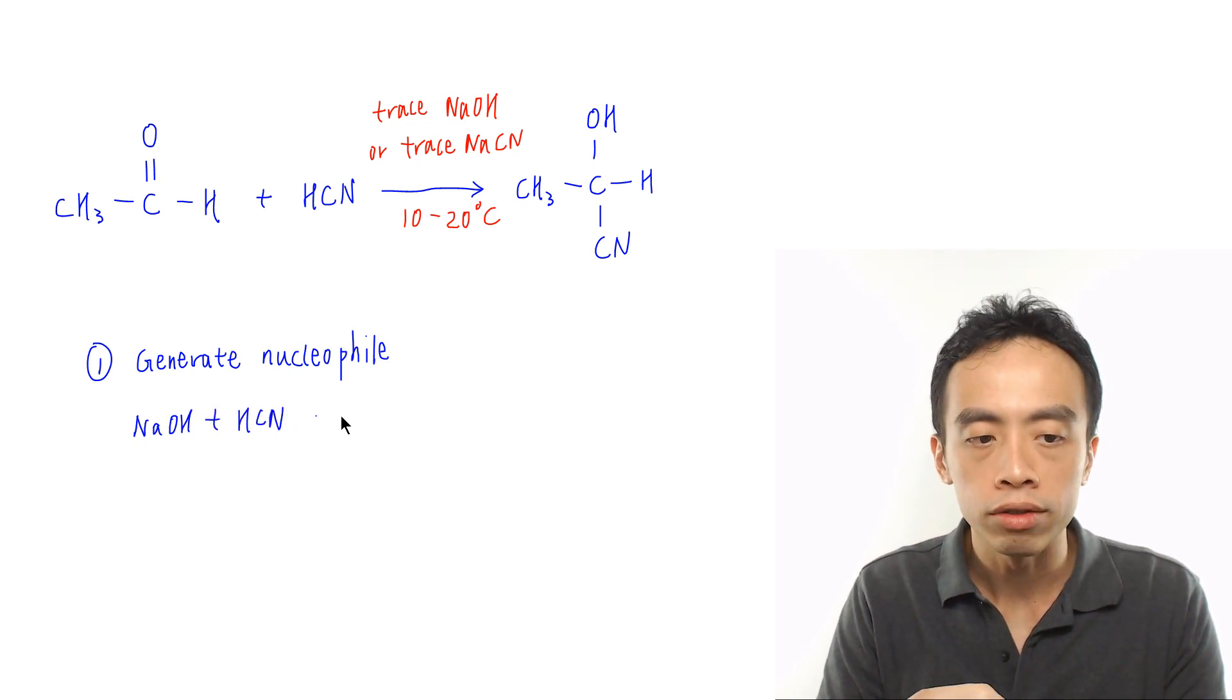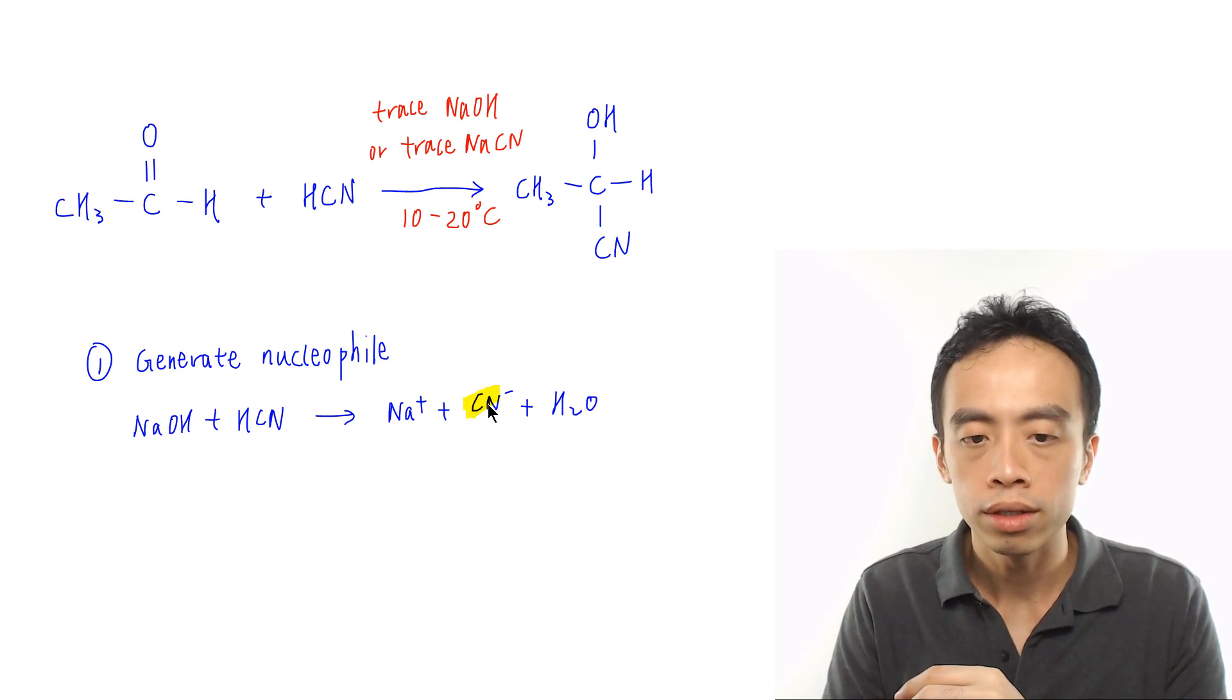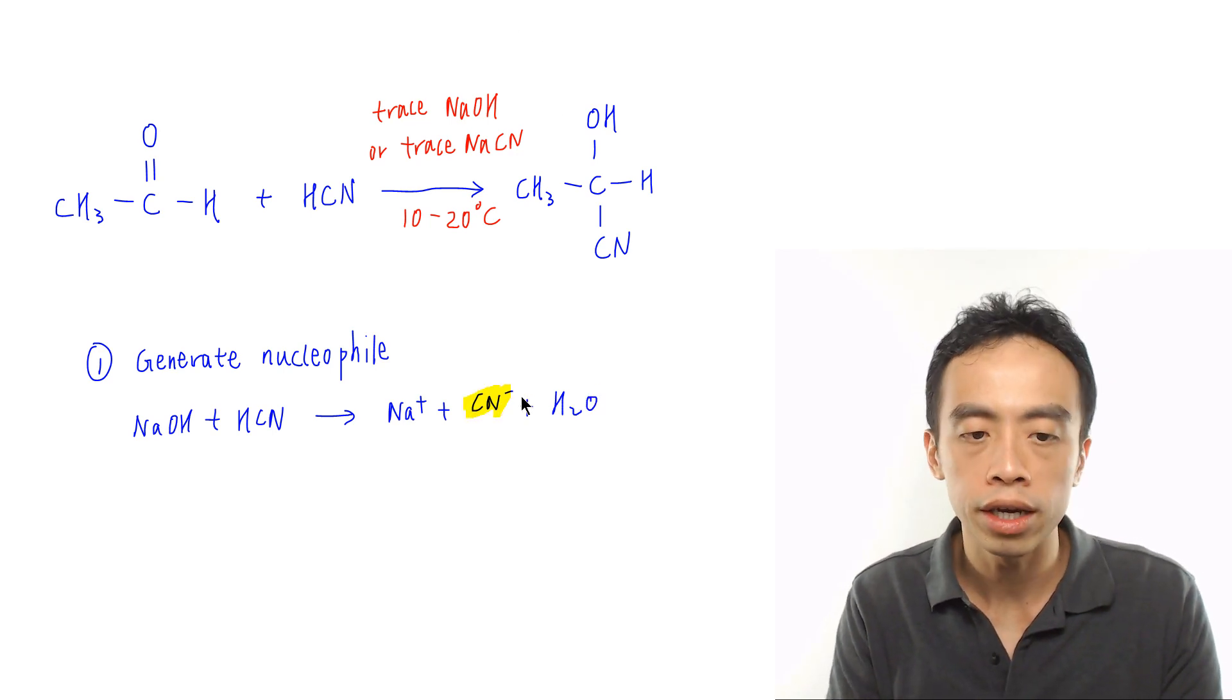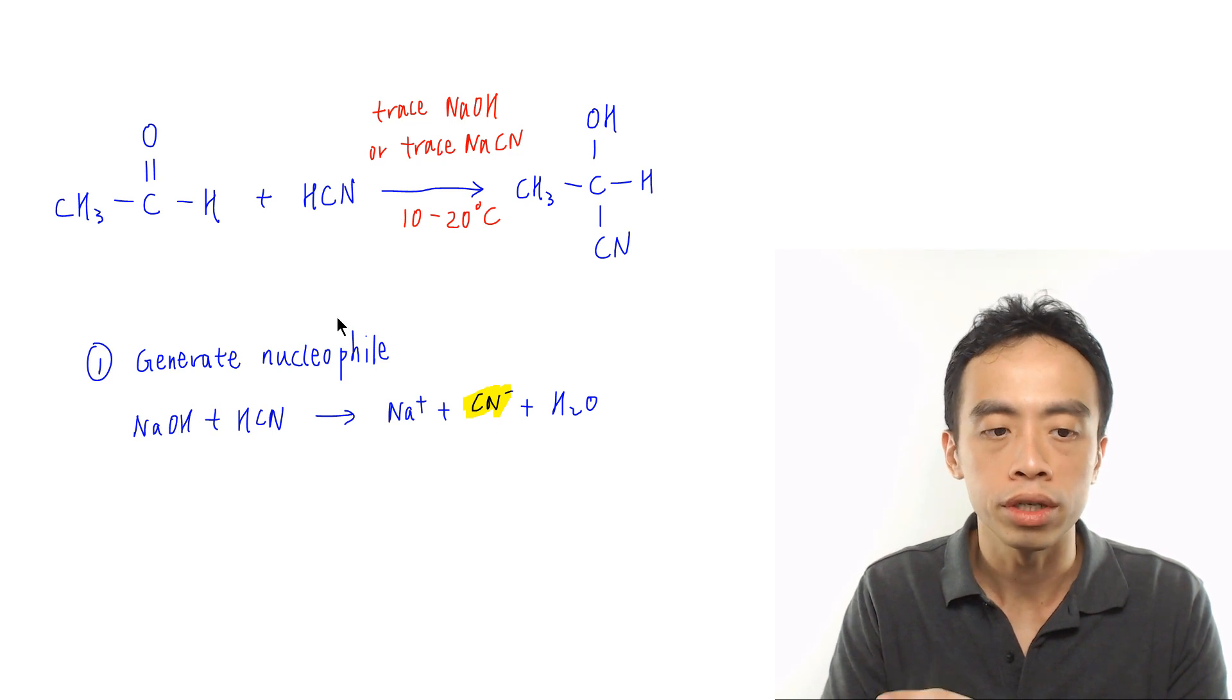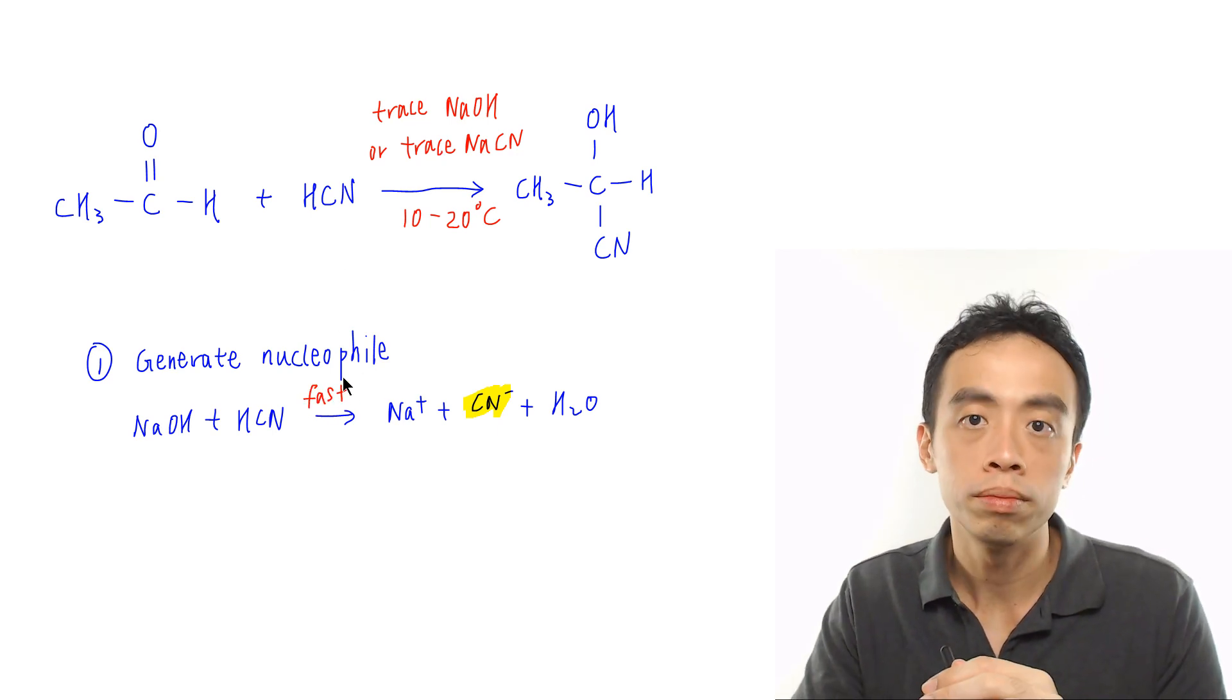NaOH reacting with HCN, which is an acid, will give us Na⁺, CN⁻, which is our nucleophile, and water. So the nucleophile nitrile is generated from this acid-base reaction. Acid-base reaction occurs readily, so this will be the first step.